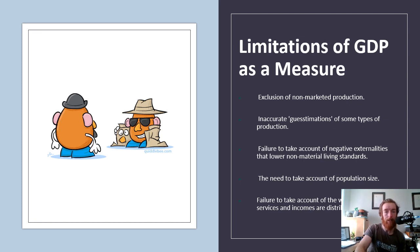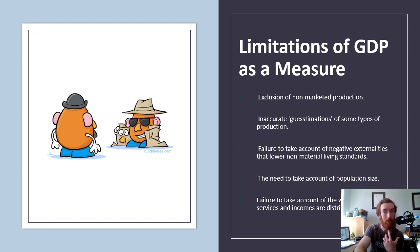GDP also fails to take into account the negative externalities that lower our non-material living standards. Producing a lot can create more pollution — that's the easiest one to discuss. Or, to achieve greater economic growth, we work more, become more stressed, and have less leisure time, which hurts non-material living standards. There are negative impacts of economic growth that can lead to lower living standards overall.